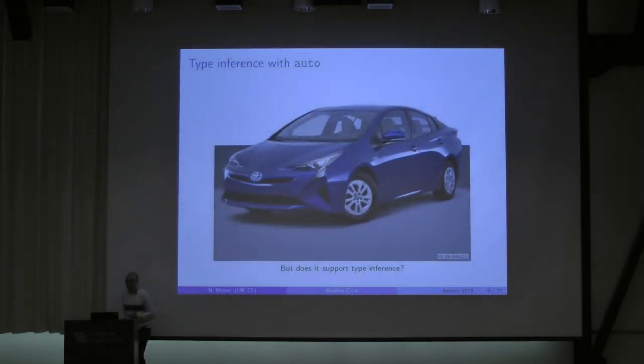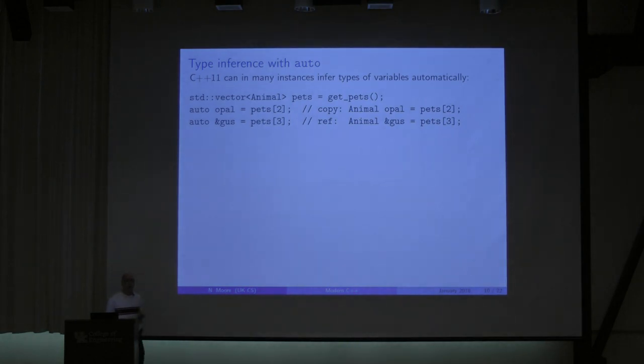All right, so, on to the next thing. Type inference with auto. That was the first picture of an automobile I found. So, in C++11, and even more in later versions of C++, we can automatically infer the types of things. So, for example, I've got this vector of animal. So, normally, or in old C++, I could write something like this, animal, and then this is the name of my variable, equals something. Well, I'm kind of repeating myself here. I'm writing the word animal several times. Really, I don't need to.